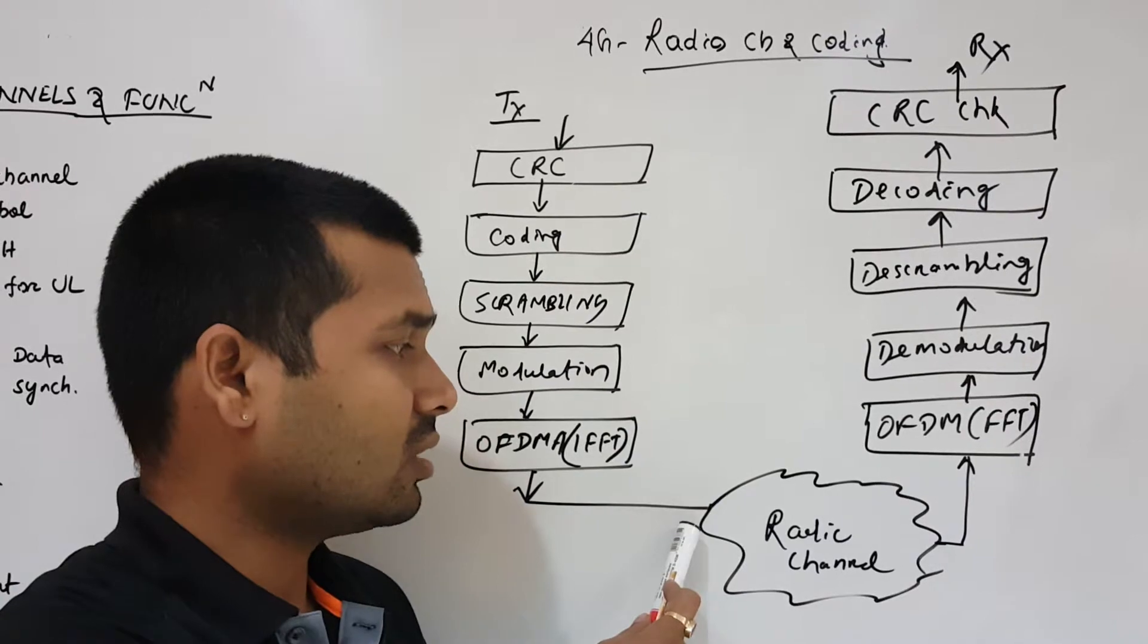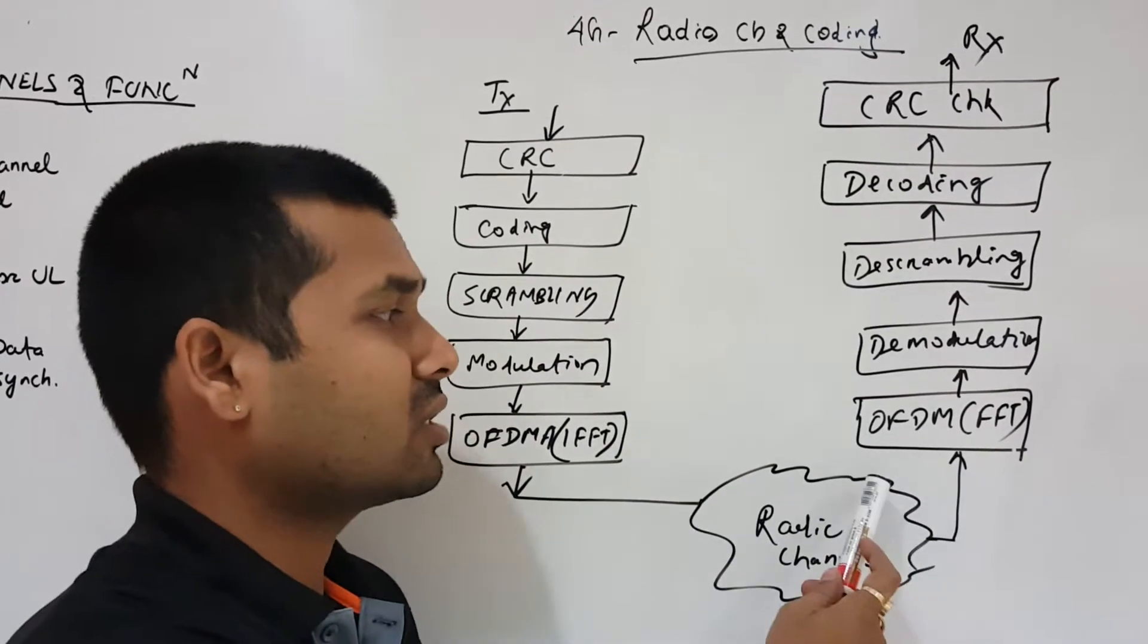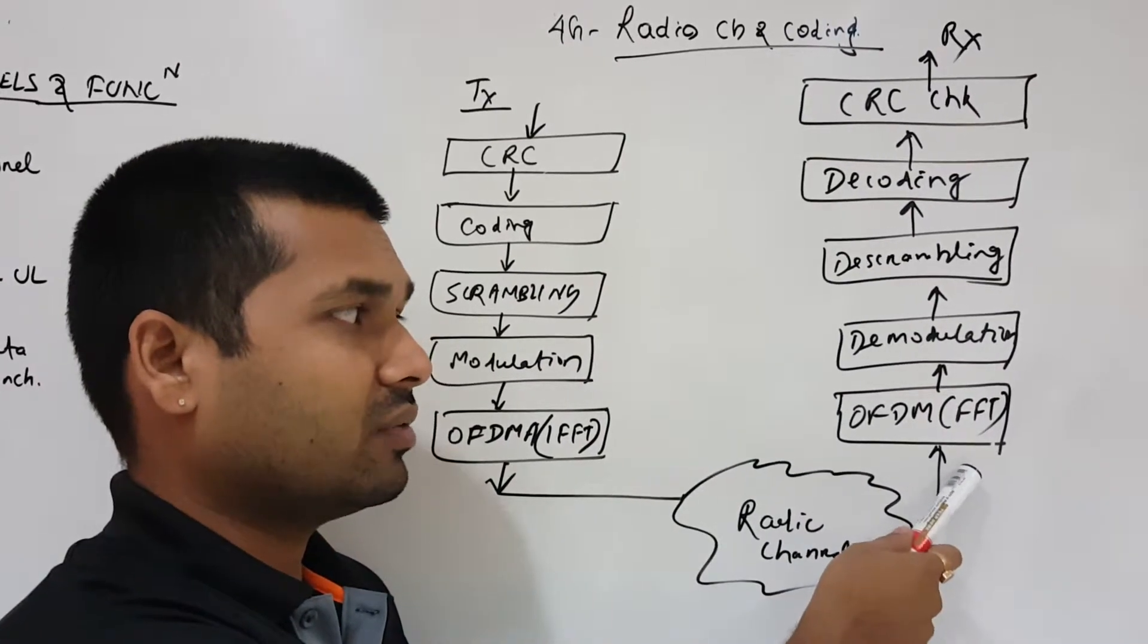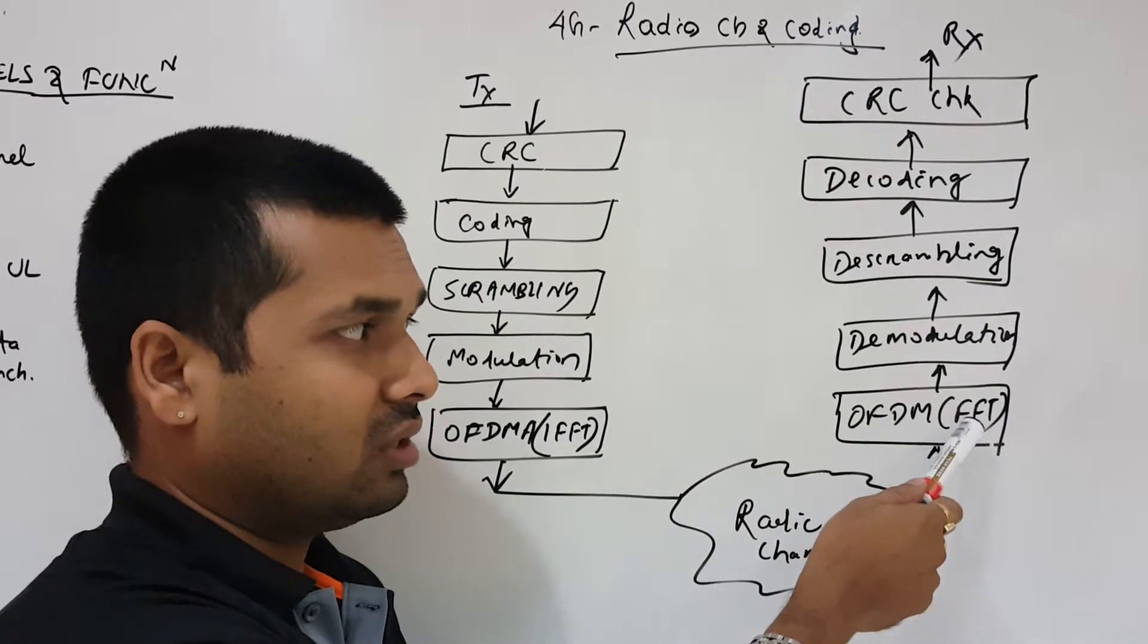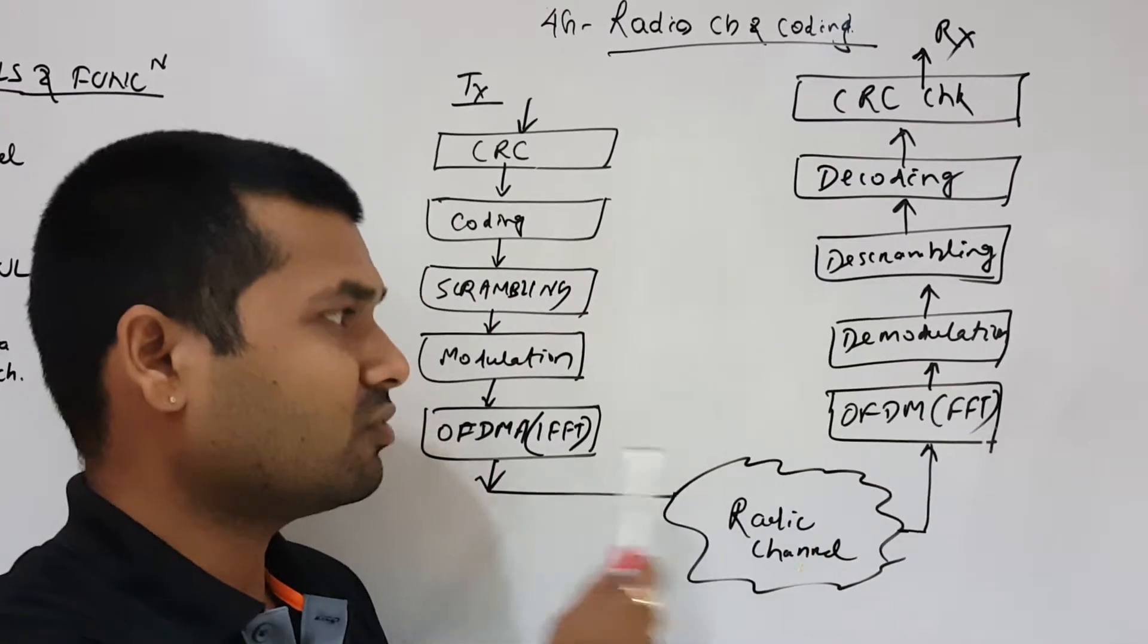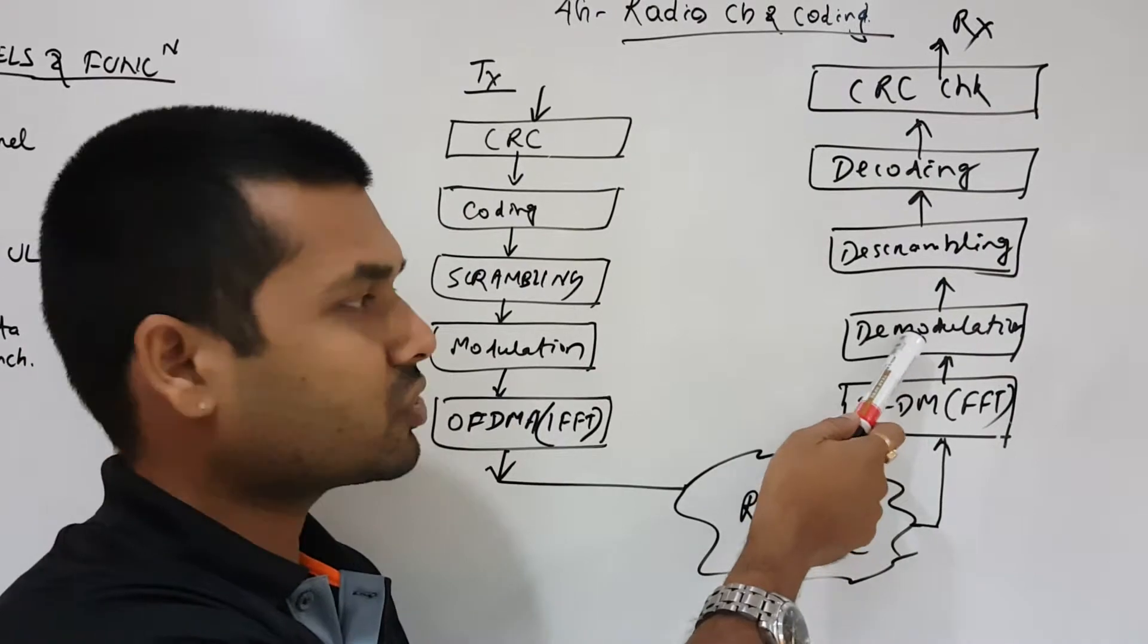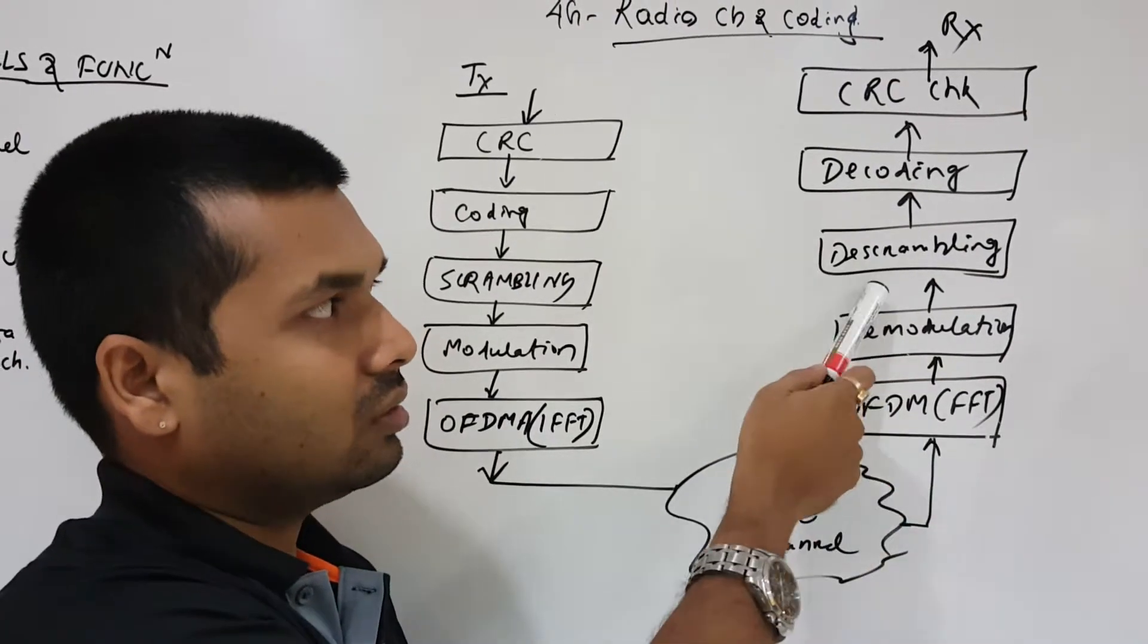Then we send the data to the radio channels. At the receiving end, we are having OFDMA FFT, fast Fourier transform. This is inverse and this is FFT. And we do the demodulation.